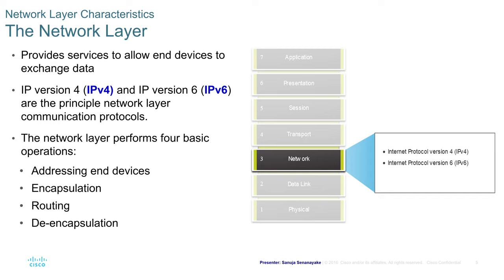The network layer provides services to allow end devices to exchange data. IPv4 and IPv6 are the principal network layer communication protocols. The network layer performs four basic operations: addressing end devices, encapsulation, routing, and de-encapsulation.